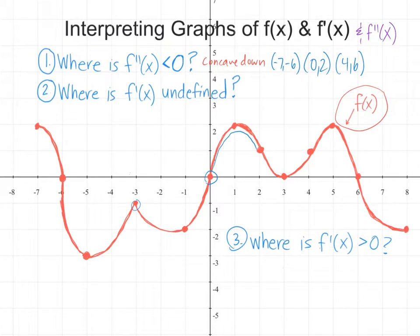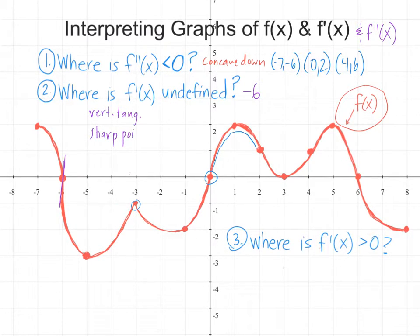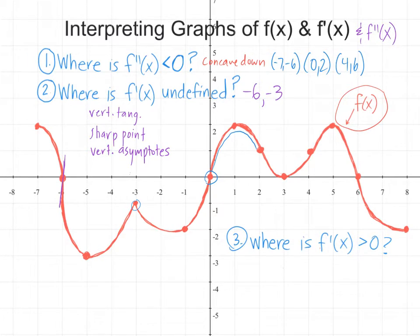My next question is: where is f prime undefined? Where's the derivative undefined? There are a few things that can make this happen. We have a vertical tangent, and that's going to happen at negative six — a vertical tangent line and a sharp point. The thing about these two types is the function is defined, but the derivative is undefined. We could also have vertical asymptotes, but those are things to look out for. This type of question usually focuses on places where the function is defined and the derivative is undefined — a vertical tangent because a slope can't be vertical and be defined, and a sharp point because the slope coming in from the left would have to match the slope coming in from the right, and there's no tangent line at a sharp point.